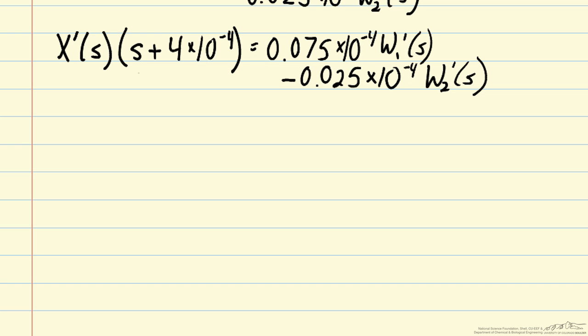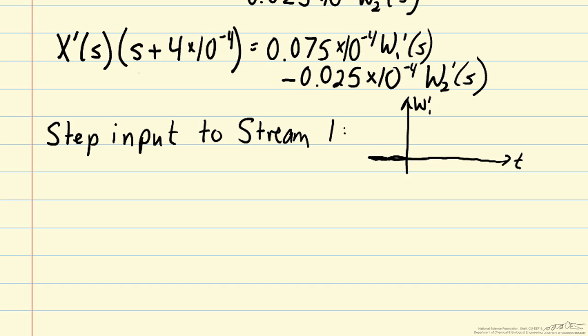Now we can consider a specific step input to stream 1. We can plot that where we have a deviation in w1 that begins suddenly at time 0 and has an amplitude of 0.1. So we're going to jump up by 0.1 from our previous steady state value when time equals 0.